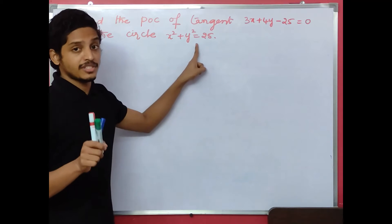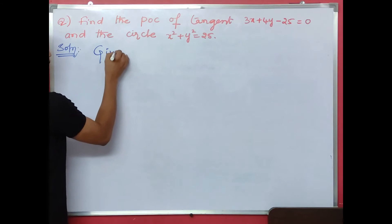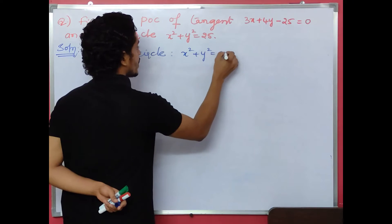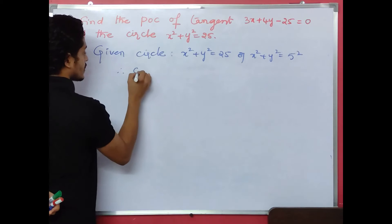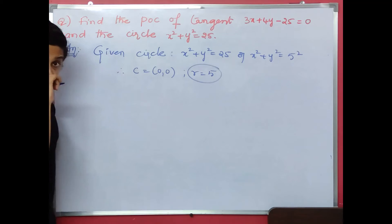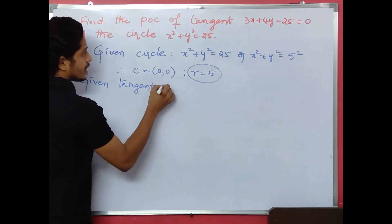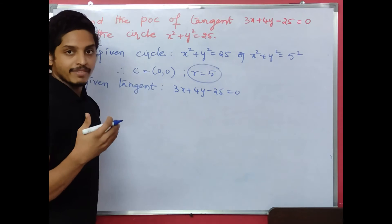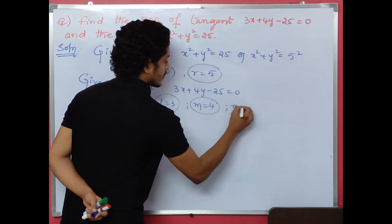Find the point of contact of the tangent 3x plus 4y minus 25 equals to 0 and the circle x squared plus y squared equals to 25. The center is the origin, and radius r equals 5. Comparing 3x plus 4y minus 25 with lx plus my plus n equals to 0: l equals 3, m equals 4, n equals minus 25.